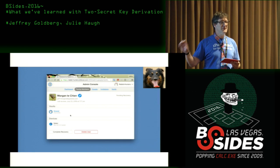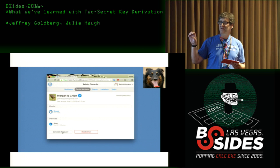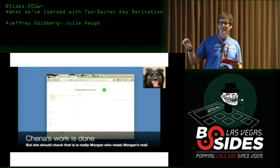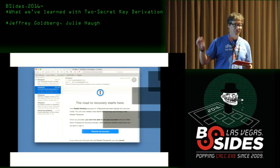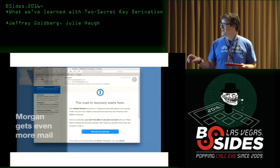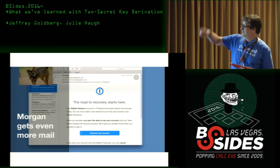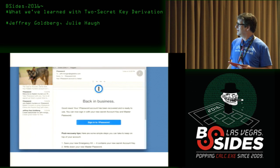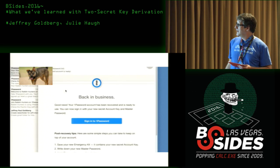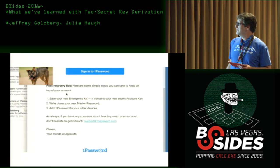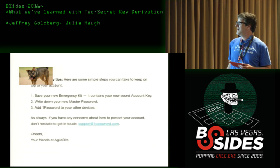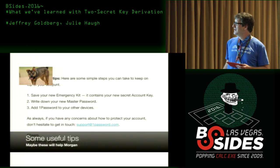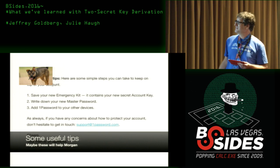She still can't get in until the team owner completes the recovery. This is because completing the recovery is when the new owner encrypts the appropriate vault keys with Morgan's new public key. And now she's back in. She gets some tips to not have to go through this again.